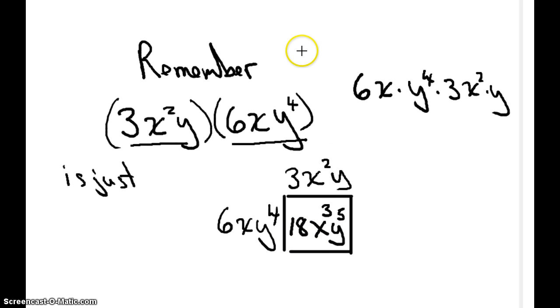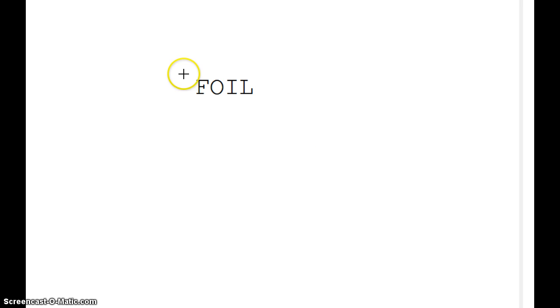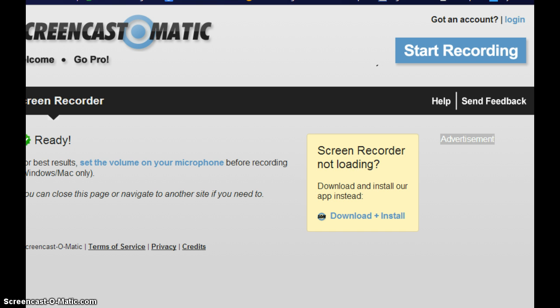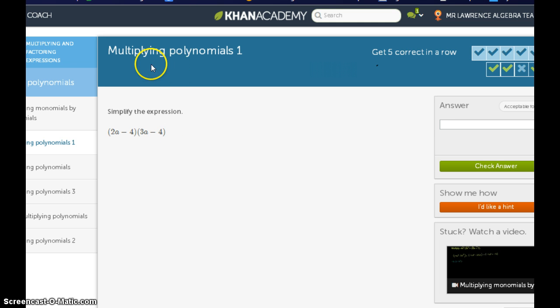So I'm going to ask you tonight to go do, on Khan, five problems. Same as last night. It doesn't matter if you get five in a row correct. I just want you to try five problems. Show your work. And bring it in. I'm also going to make another video tomorrow night on a method called FOIL, which will help you multiply a binomial times a binomial. And it uses the box method, but this is just a little bit of a shortcut. So tonight, I want you to go do multiplying polynomials. There's a link waiting for you. And we will meet tomorrow and make sure we've got all this down. Good night.